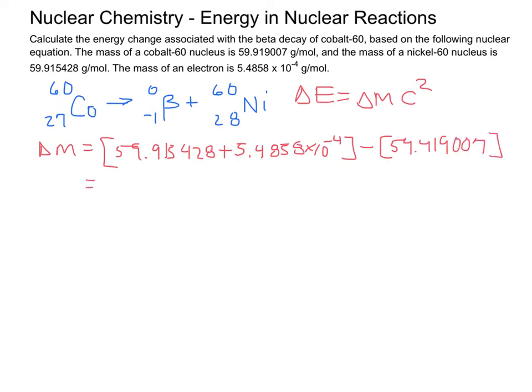Your change in mass should be something on the order of a negative 0.003030 grams, which, of course, you want to convert to kilograms, because, in this Einstein equation, mass has to be in kilograms. We're talking about negative 3.030 times 10 to the negative 6 kilograms as your delta M.